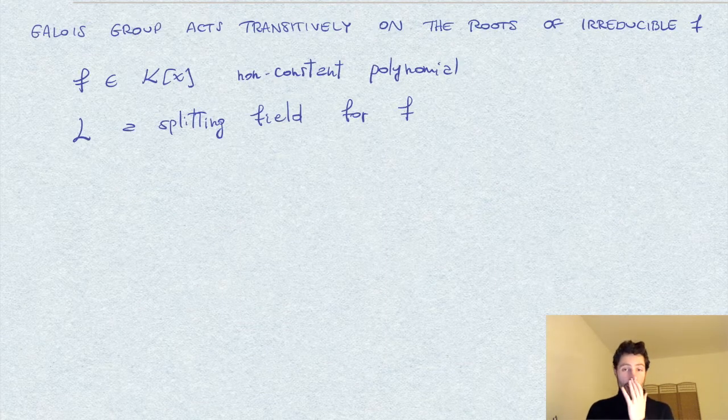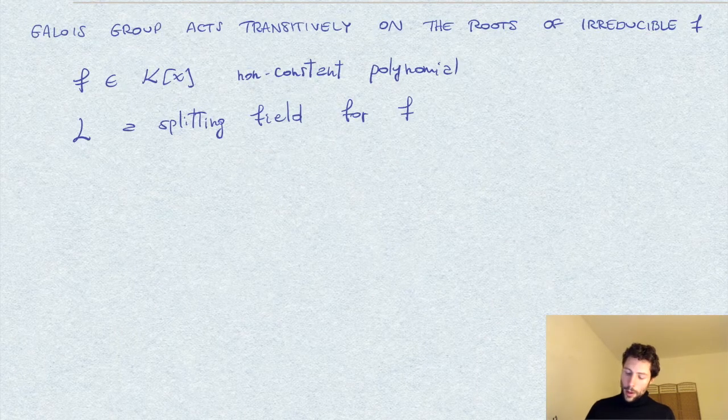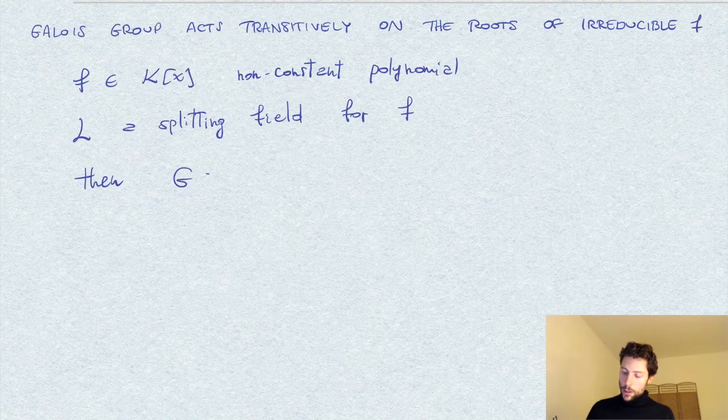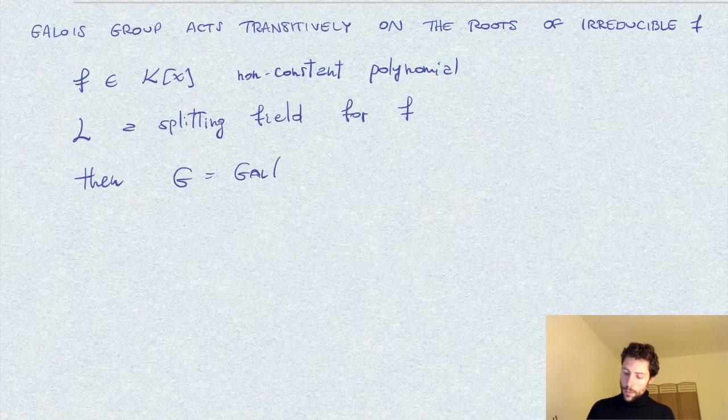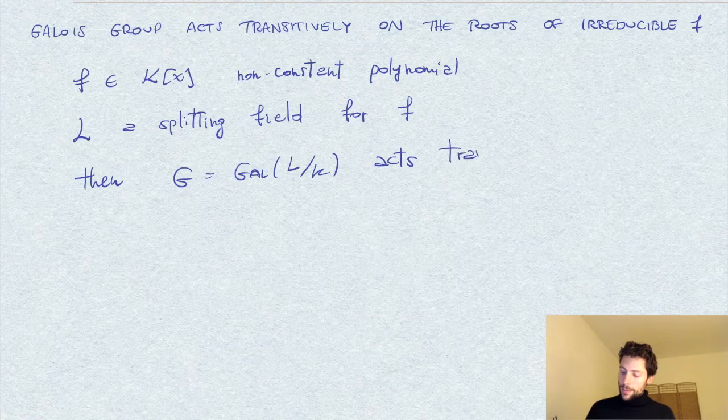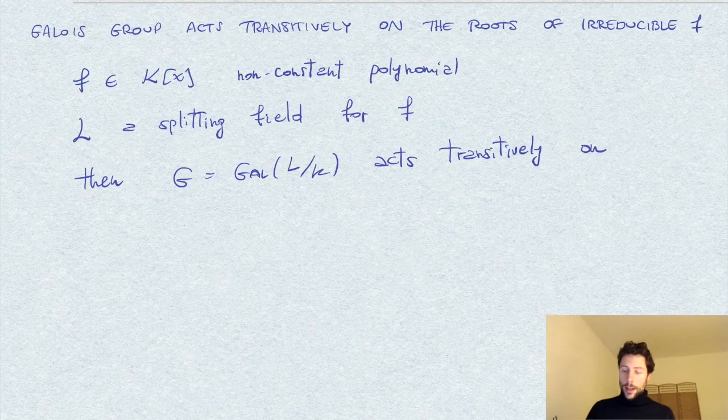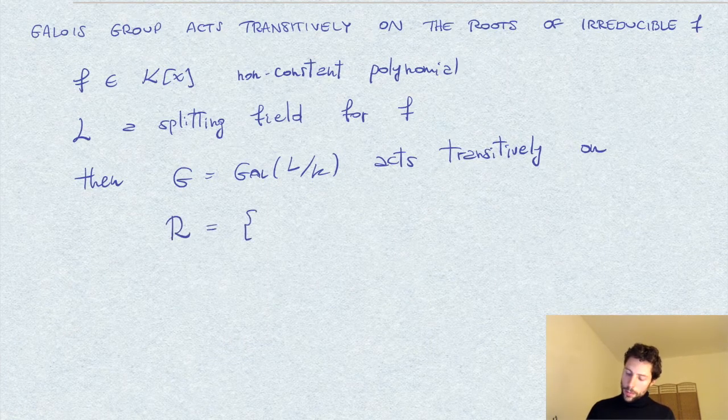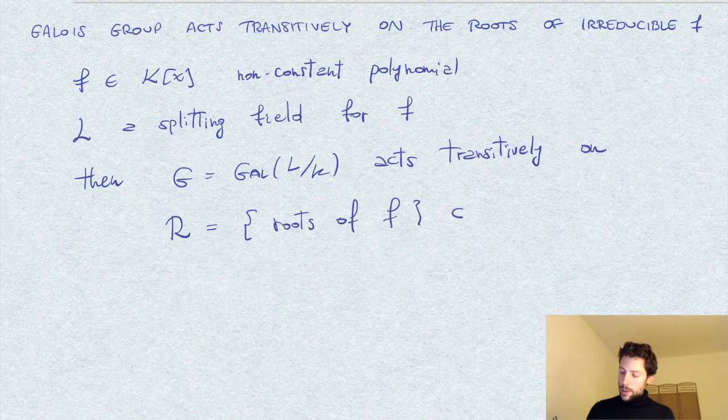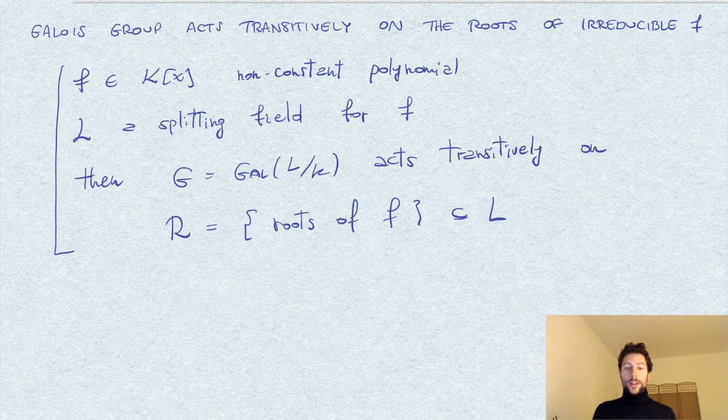So it's a field that contains all the roots of F. Then what we can prove is that the Galois group G acts transitively on the set that I will denote by R of roots of F, as a finite subset of L. So this is our statement.